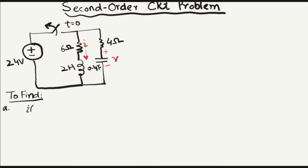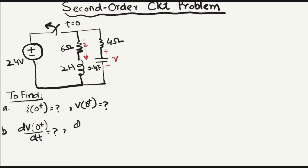Given these values, we have to find the initial value of current and voltage. We know the current at t equals 0 negative is equal to 0. For part A, we find current and voltage at t equals 0 positive. For part B, we find voltage and current just after the switching time. And in part C, we find the final voltage and current when time approaches infinity.